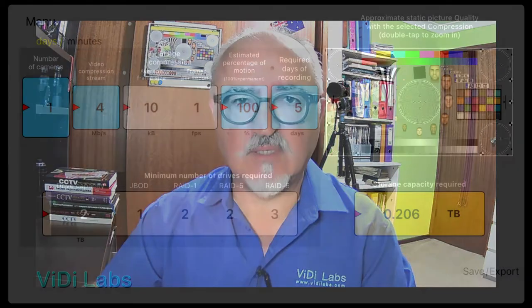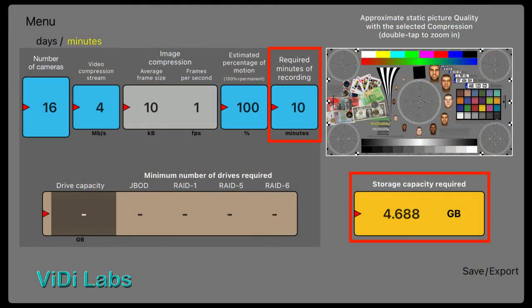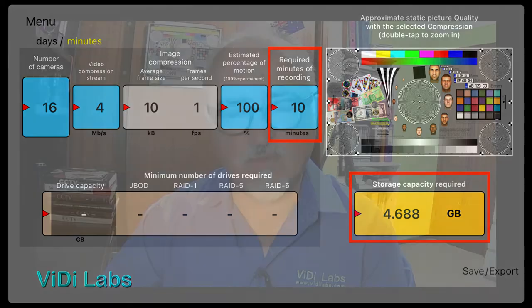The VidiLabs Calculator can also help you in determining the required hard disk storage for a given days of recording, or perhaps tell you what size of a USB flash drive you need in order to export 10 minutes of video, for example, of all your cameras involved in recording an incident in your CCTV system, so that you can pass this to the authority for further investigation.